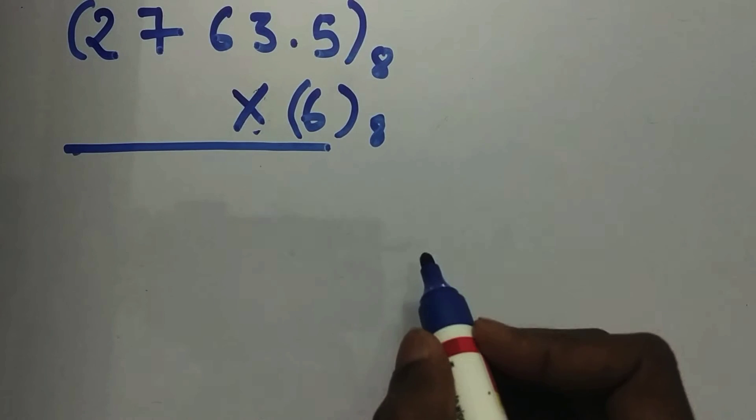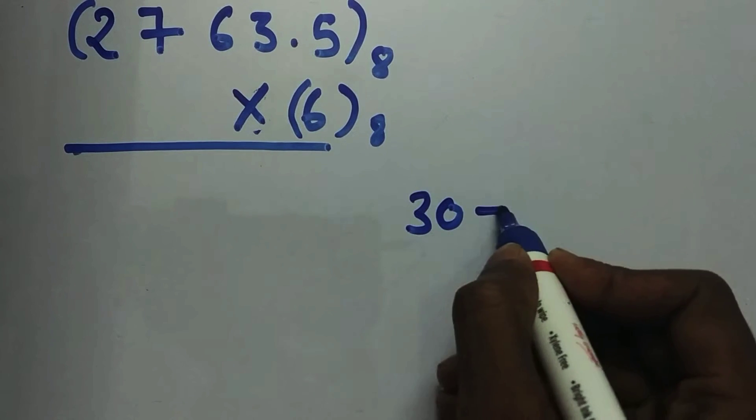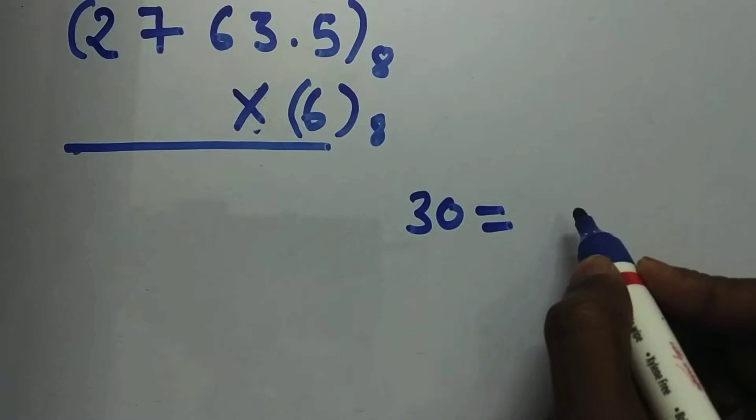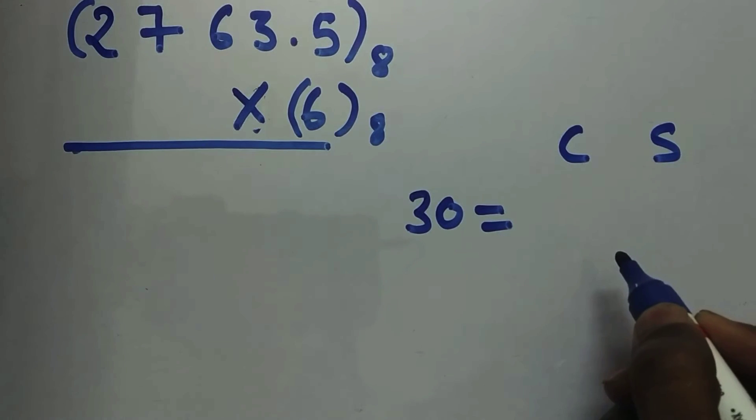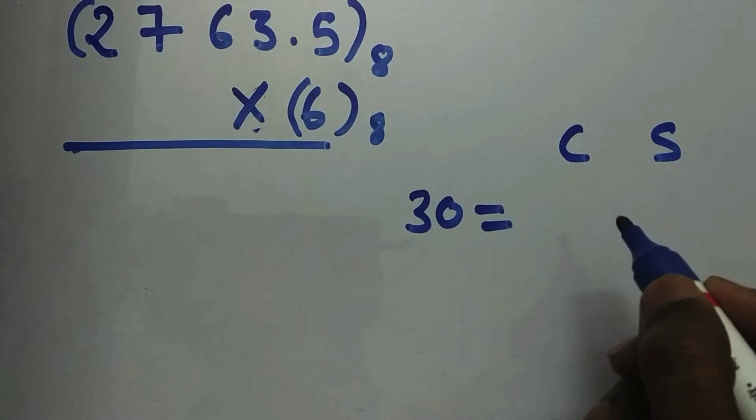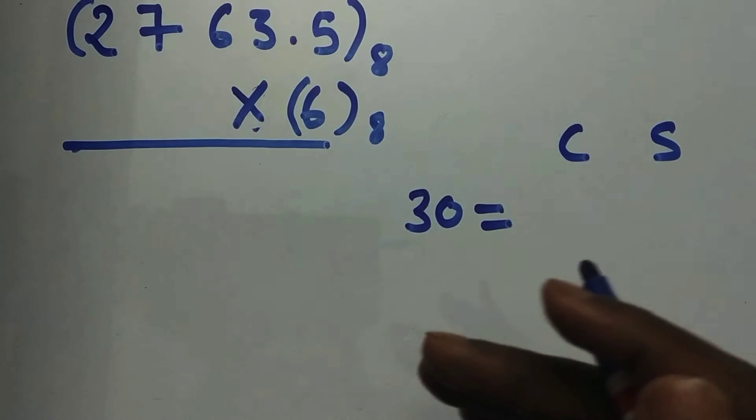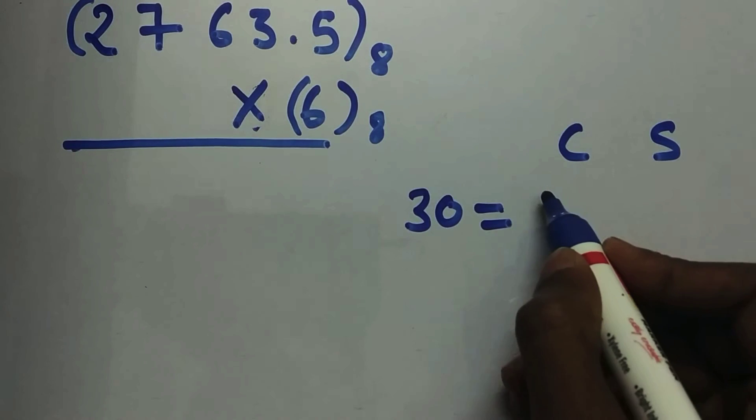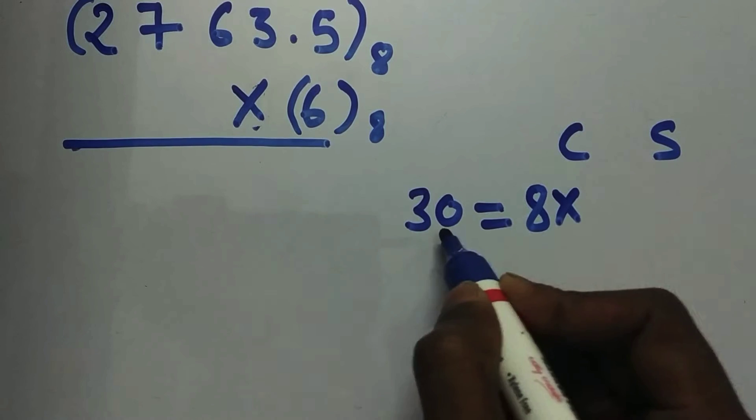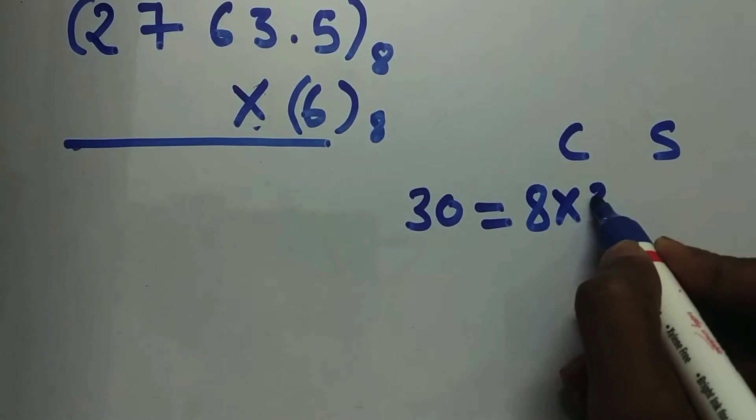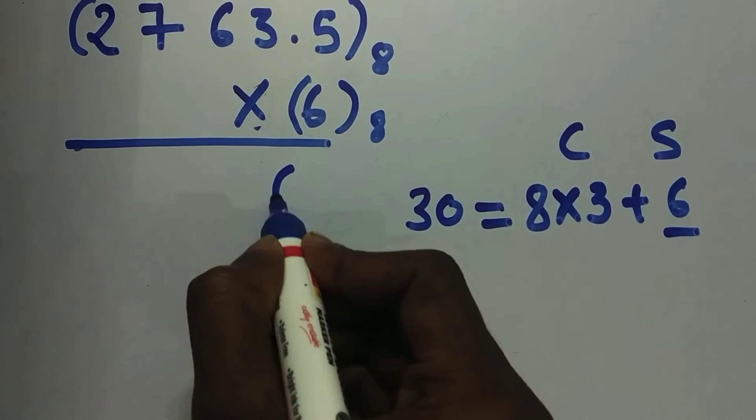Let's multiply 6 into 5, that's 30. So 30 we need to convert into octal. I would suggest you write C and S so that it would be better for you because it's better to go in a step procedure rather than going in a hurry manner. So write C and S. Now convert into octal: 8 into 3 is 24 plus 6. Sum we are gonna write over here, so carry will be added with the next product.